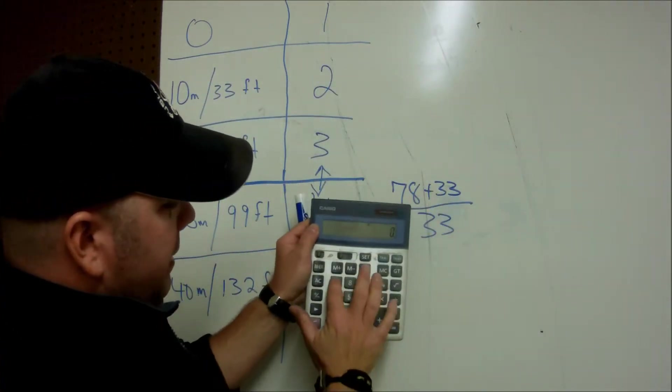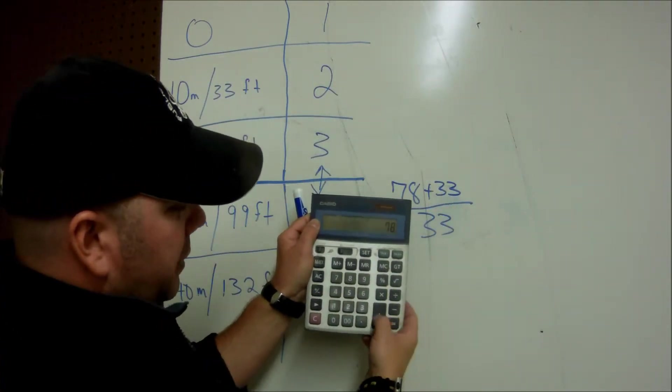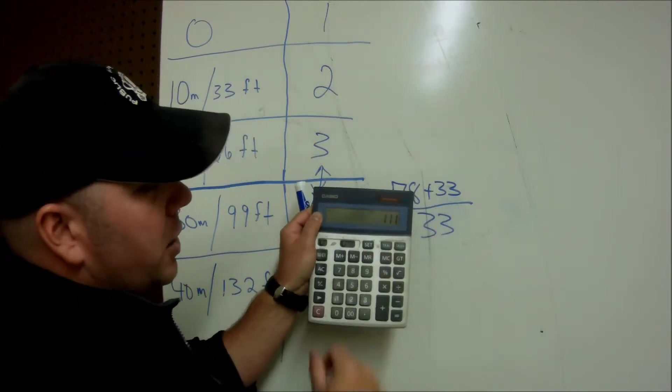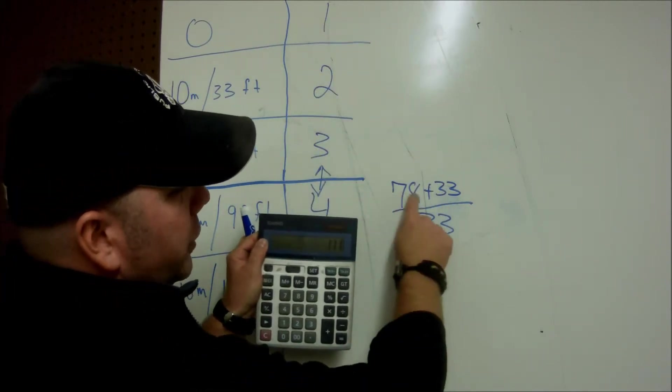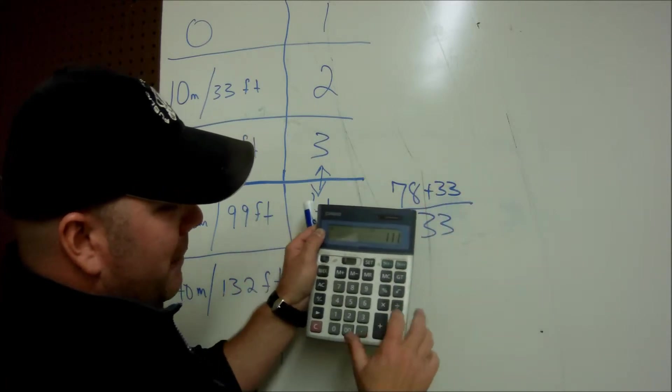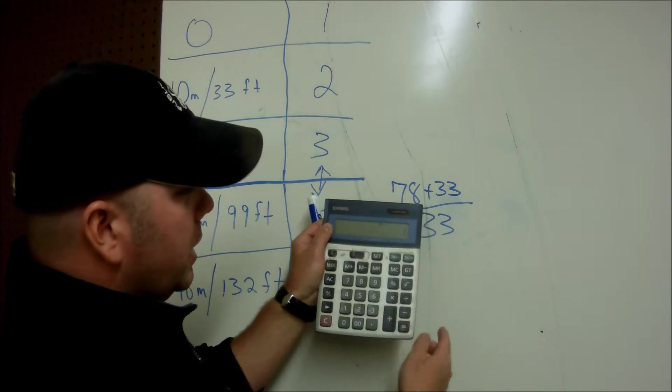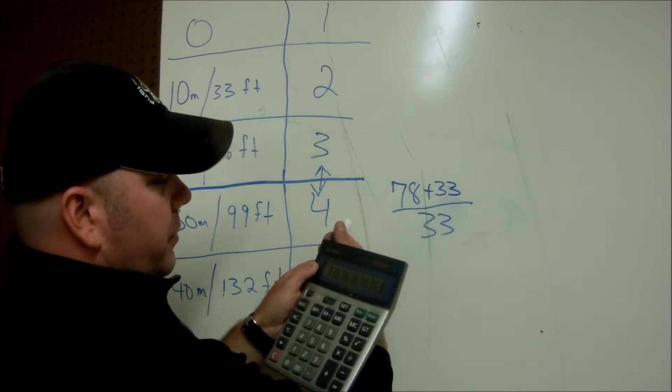So if I show you on a calculator here, I'm going to take 78, add my atmosphere to it, which is the atmosphere of the surface. That's going to give me 111. Then I would divide that 111 by my actual atmosphere or what an atmosphere is for salt water, and it's going to give me 3.36.